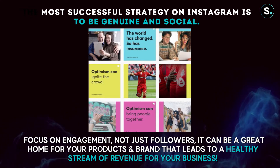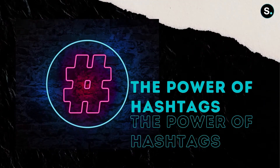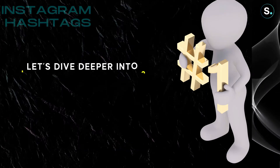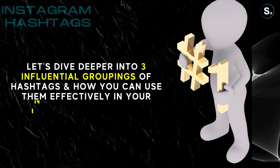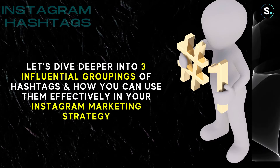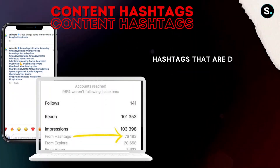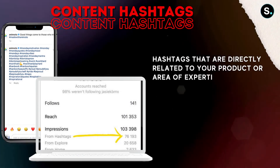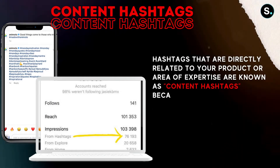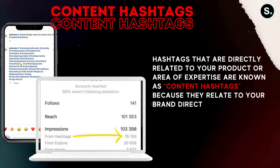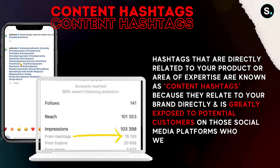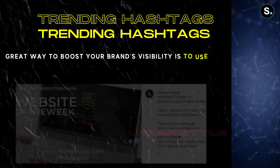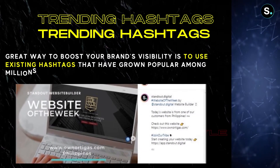If you focus on engagement — not just followers — Instagram can be a great home for your products and brand, leading to a healthy stream of revenue for your business. Number two: the power of hashtags. There are three influential groupings of hashtags you should use on social media. The first type is content hashtags — hashtags directly related to your product, service, market, or area of expertise — which will greatly expose your brand to potential customers who weren't previously familiar with it.